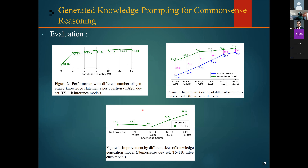They also investigated the impact of the size of the knowledge generation model — here GPT-3 — on downstream performance. Performance improves as the size of the knowledge generation model increases, suggesting that larger models are able to generate more useful knowledge. However, the improvement gain begins to saturate as the model size increases.